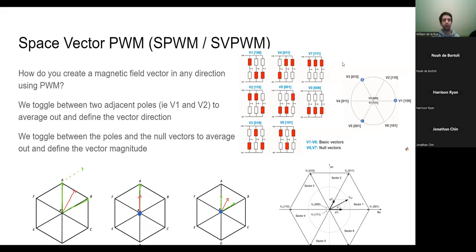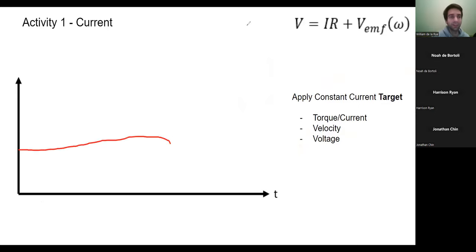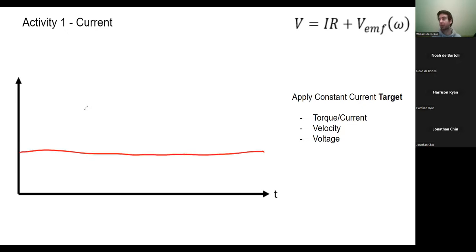Welcome back. We'll try to go a little bit quick this week, but first we've got this activity on understanding how current, voltage, and velocity are involved. Grab your pens and draw on it if you want. Imagine you have a control loop applying a constant current, which means a constant torque. Now, if we're applying constant current we're applying constant torque - what's going to happen to the velocity?